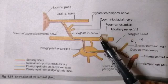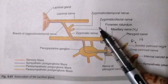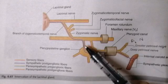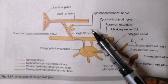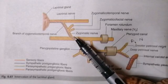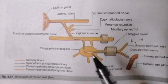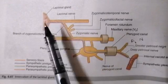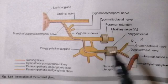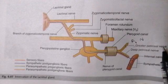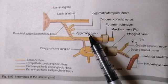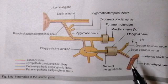The postganglionic parasympathetic fibers are carried by the zygomatic nerve, a branch of the maxillary nerve. The maxillary nerve passes through the foramen rotundum and gives off the zygomatic branch, which anastomoses with the preganglionic fibers of the greater petrosal nerve at the pterygopalatine ganglion. The postganglionic fibers travel via the zygomaticotemporal and zygomaticofacial branches, ultimately supplying the lacrimal gland through the lacrimal nerve.